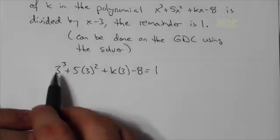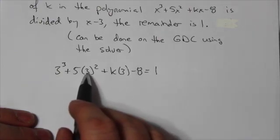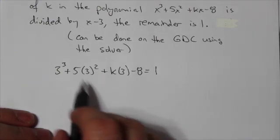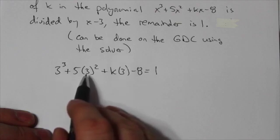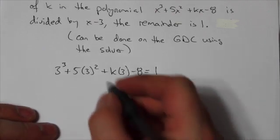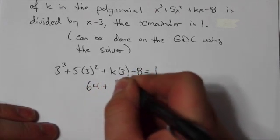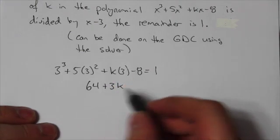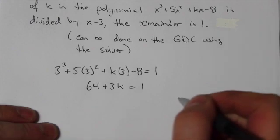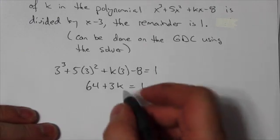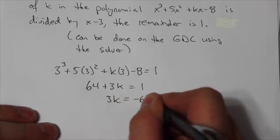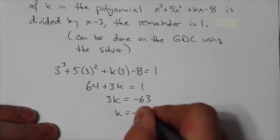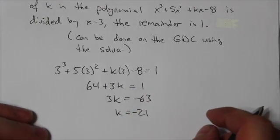Now, 3 cubed is 27, 3 squared is 9 times 5 is 45, so 27 plus 45 minus 8. Do the math in my head, that's a lie. I have it written down on a piece of paper next to me. 64 plus 3k is equal to 1. Bring the 64 over, 3k is equal to negative 63. k is equal to negative 21. Now that's using the remainder theorem.